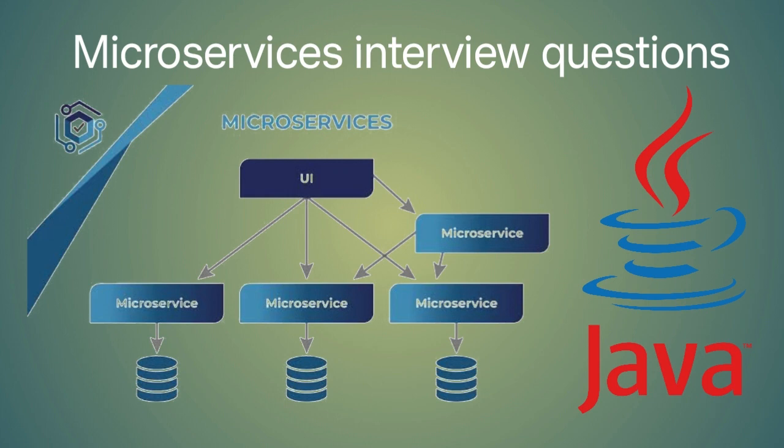How do you handle the complexity of inter-service dependencies in a large-scale microservices architecture? To handle this complexity, you can use techniques like domain-driven design, event-driven architectures, and bounded contexts. You can also use service meshes like Istio to manage the communication between microservices.